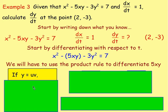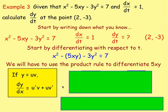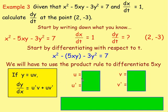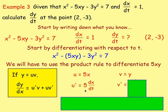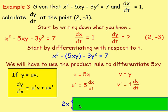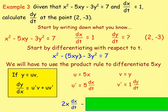Using the product rule: if you have the product of two functions u and v, then the derivative is u'v + uv'. For 5xy, let u = 5x and v = y. Differentiating 5x gives 5, but because we're differentiating x with respect to t, we bring in dx/dt — so u' = 5 dx/dt. For v', differentiating y with respect to t gives dy/dt. Differentiating x² gives 2x dx/dt. Applying the product rule to 5xy: u'v = 5 dx/dt · y, and uv' = 5x dy/dt.